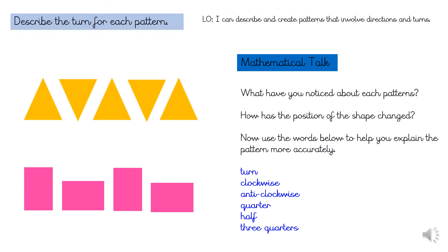Use the mathematical talk to explain what's happening in these repeating patterns. Think about the direction the shape has moved each time. Is it clockwise or anti-clockwise? Has the shape turned a quarter turn, half turn or three quarter turn? Make sure you use the language to help explain the pattern more accurately.